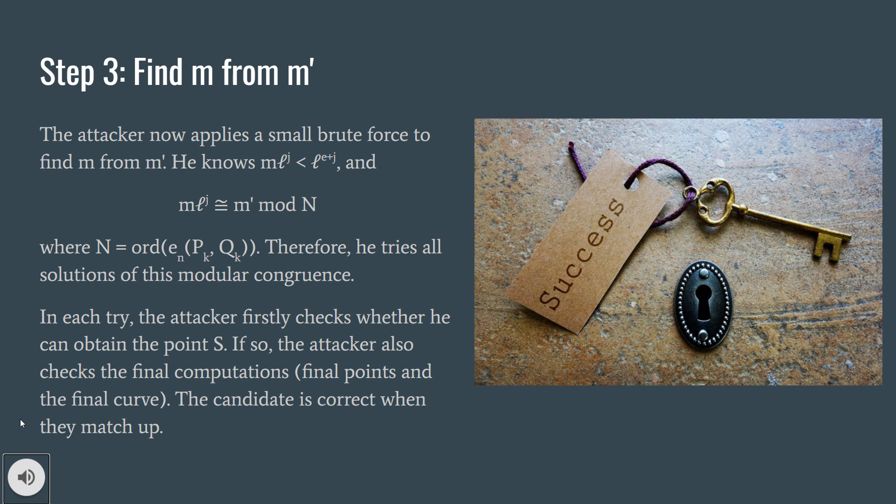Step 3, finding m from m dash. Now, the attacker applies a small brute force attack to find m from m dash. He knows that m times l to the j is less than l to the e plus j. And also, he knows that m times l to the j is congruent to m dash in modulo n, where n is the order of Weil pairing of Pk and Qk. Therefore, he tries all the solutions of this modular congruence. In each try, firstly, he checks whether he can obtain the point S, because he knows S. If so, the attacker also checks the other final computations, like reaching the final points and the final curve from the public key. The candidate is correct when they match up.